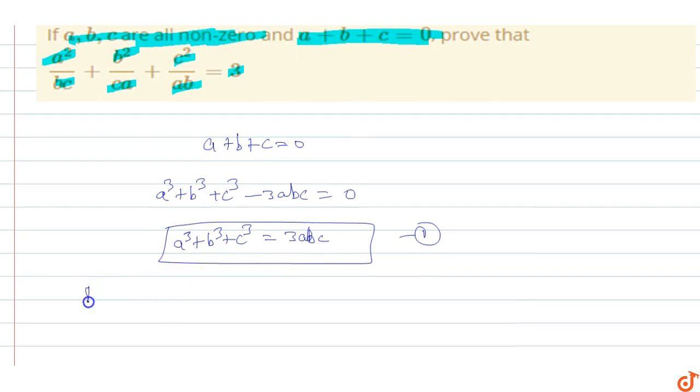So firstly we will take the LHS. LHS is a square upon bc plus b square upon ca plus c square upon ab. So LHS, we can say, LHS is abc.